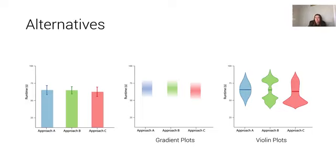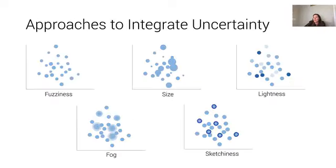So these just offer two kinds of alternative uncertainty representations that have been shown to be more reliable than your traditional bar chart plus error bars. But it's also possible to layer uncertainty on top of existing visualizations.